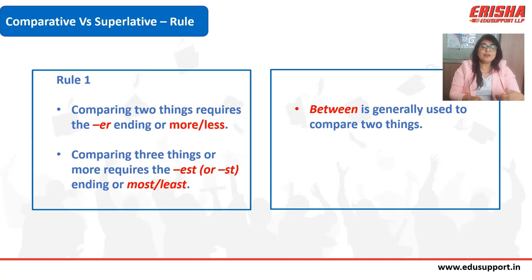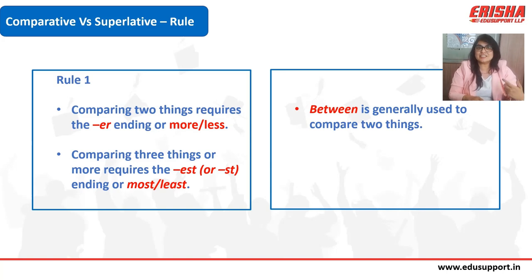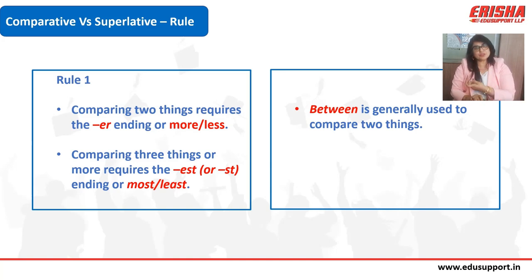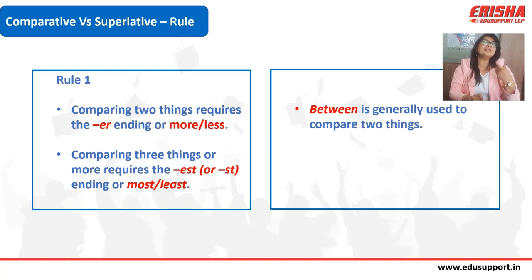If a word has more than one syllable, use 'more' or 'most.' For example, 'intelligent' is a two-syllable word, so: intelligent → more intelligent → most intelligent.